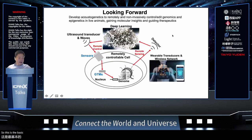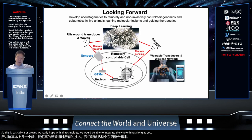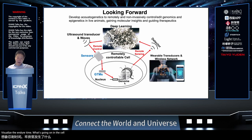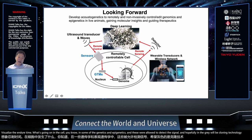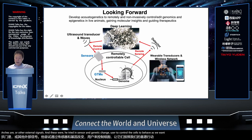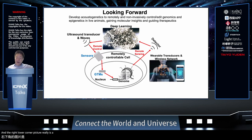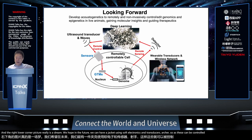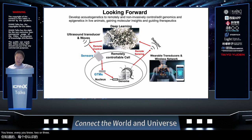Our ultimate dream, shown in the lower right corner image, is a wearable jacket using soft electronics and ultrasound transducers, controlled by a smartphone app. The patient can simply have a short local 'massage' — five to ten minutes every two or three days — to conveniently control the tumor treatment.